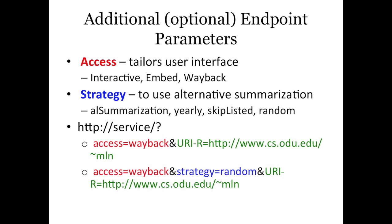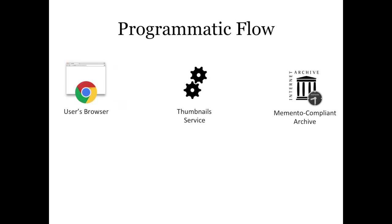To use this, you set up a service — all open source software. You pass parameters via the query string. For example, access equals wayback and URI equals Dr. Nelson's site. Everything but the URI is optional because there are smart defaults. You can pass access equals wayback and strategy equals random to get the Wayback interface with the random strategy. There's also an interface that means you don't have to type anything in the URL bar, making it simple to interact with the service.